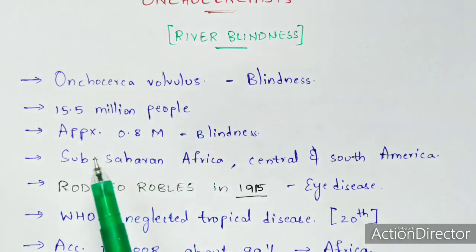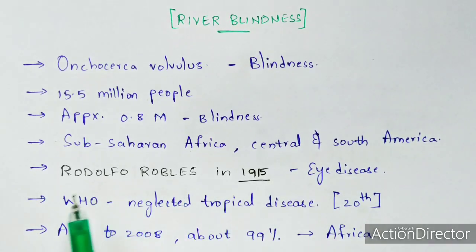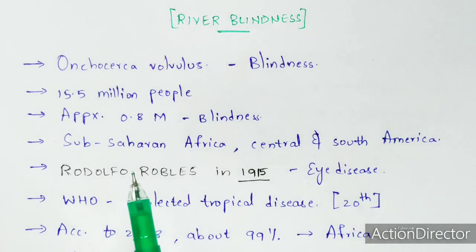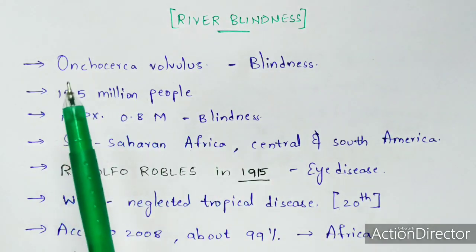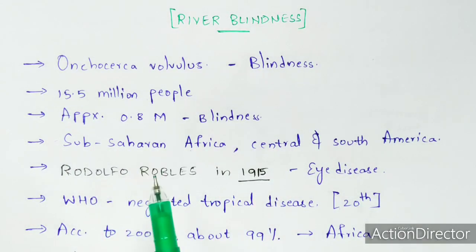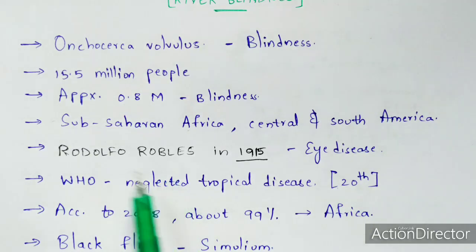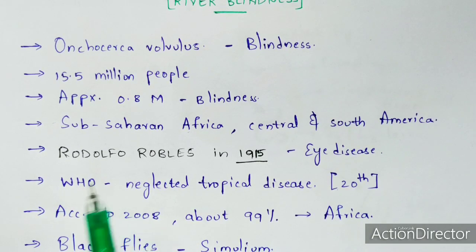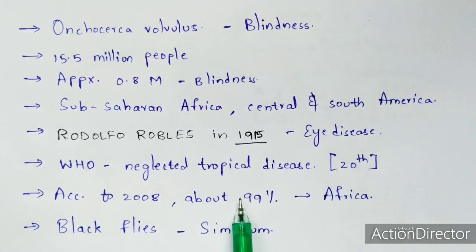Onchocerciasis is a disease commonly seen in areas such as sub-Saharan Africa, Central and South America. A scientist named Rodolfo Robles discovered this eye disease in 1915. This disease has been registered as the 28th neglected tropical disease by the World Health Organization (WHO).